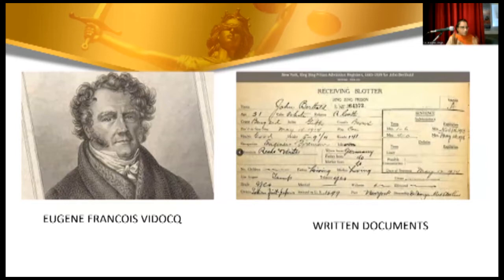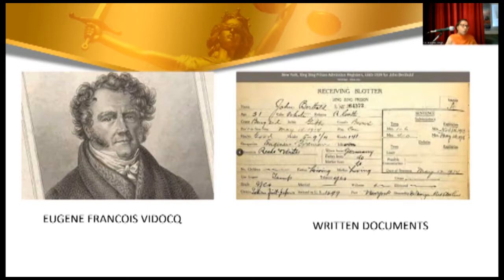The next technique was memorization. Before the 18th century, towns were small and people knew each other, so if crimes were committed they knew whom to catch. But with the advent of industrialization and people flooding into large cities, this became difficult. A person named Eugène François came up with a technique where he studied 30,000 criminals — visiting jails, observing them, and collecting information — making a detailed account of those documents.